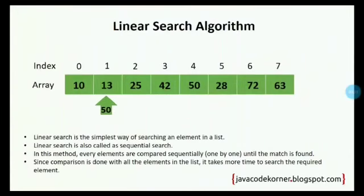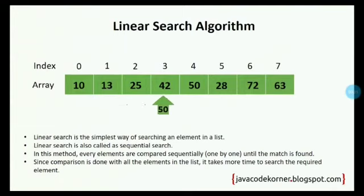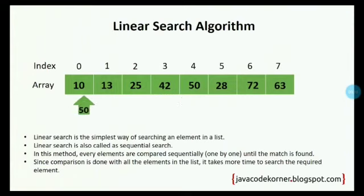Let us see another example of linear search. The element to be searched is 50. The comparison starts from the beginning and stops as soon as a match is found, and the index is printed.